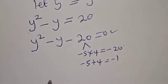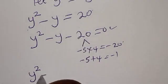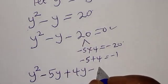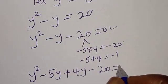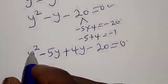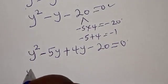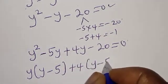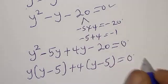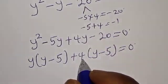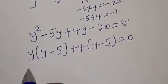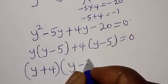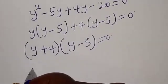So we have y squared minus 5y plus 4y minus 20 equals zero. Grouping the terms: y(y minus 5) plus 4(y minus 5) equals zero. This gives us (y plus 4)(y minus 5) is equal to zero.